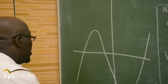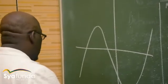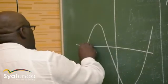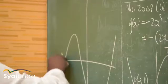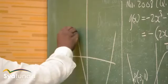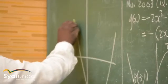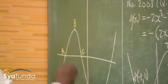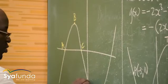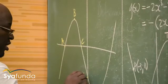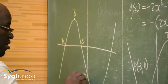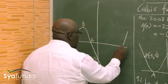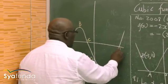If this point is point A, let's call this point B, let's call this point C, let's call this one point D, let's call this one point E, let's call this one point F.